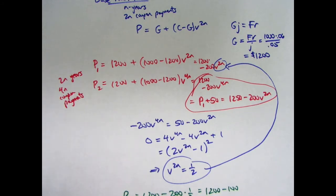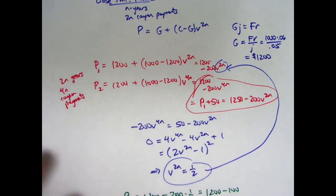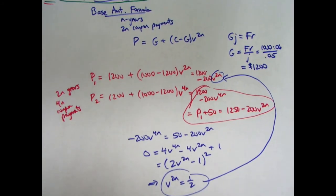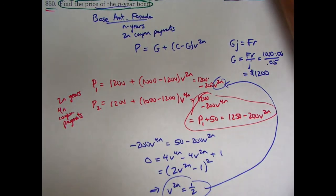So again, I hope it's pretty clear in looking this over that the base amount formula is probably the best way to go. You could try the other formulas and see that you get the same thing, and probably they are not quite as quick.